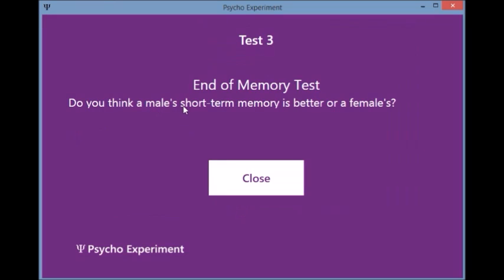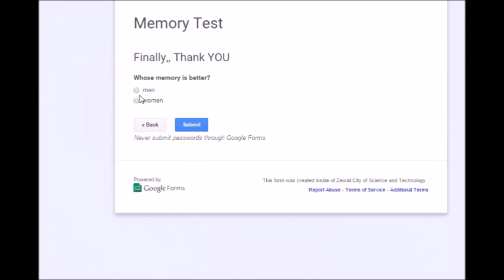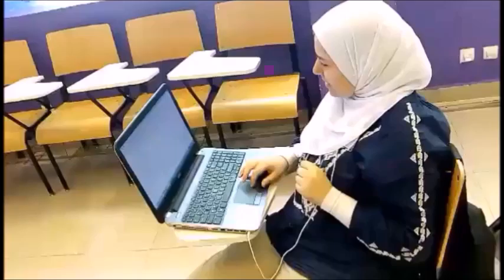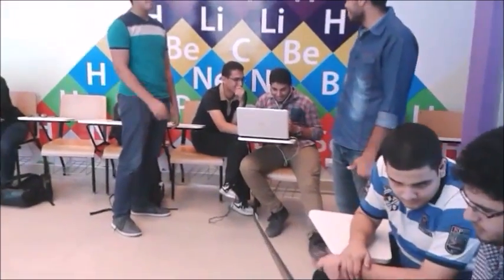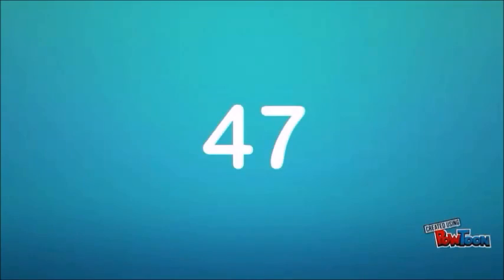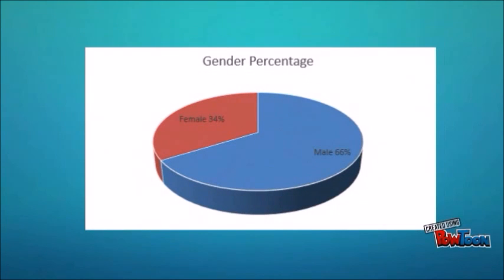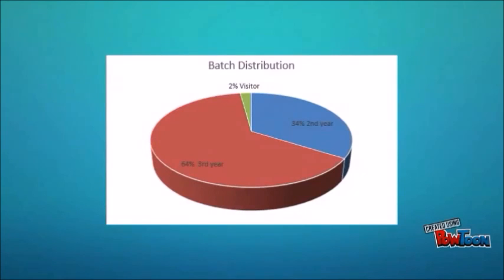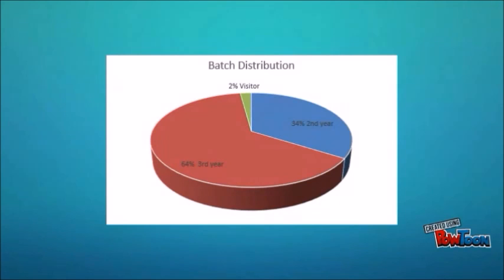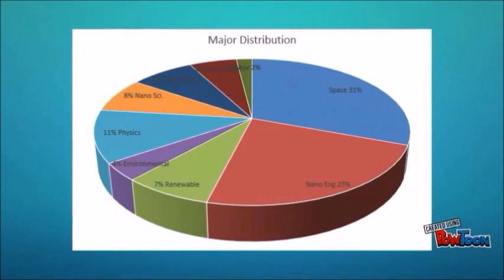Finally, the participants were asked their opinion about who has a better short-term memory — a male or a female. Fortunately, we were able to perform the experiment with 47 of our colleagues. It wasn't a huge number, but we were restricted to our colleagues' count. So, 47 subjects were tested: 66% males and 34% females. Third-year students were also twice as many, and only one visitor participated. Most participants were from Space and Nanotechnology, so we consider our sample quite representative.